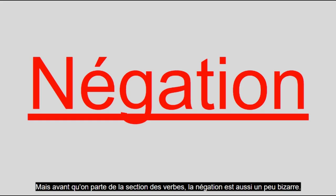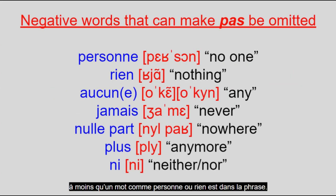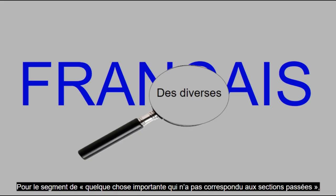Before leaving the verb section, negation is also a bit weird. You put ne before the verb and pas after it, unless a word like personne or rien is in the sentence.